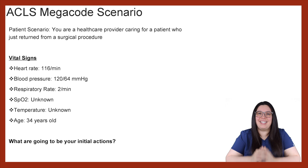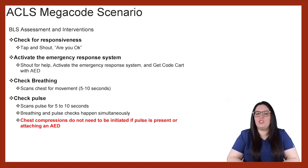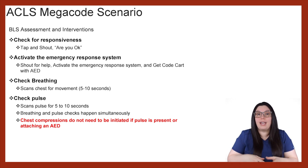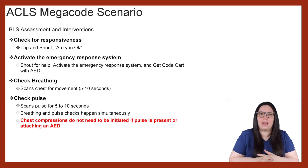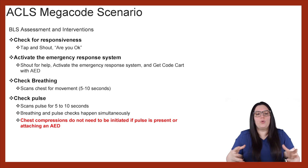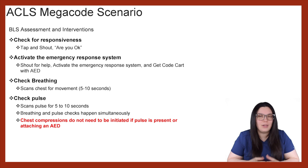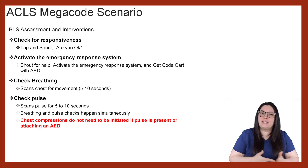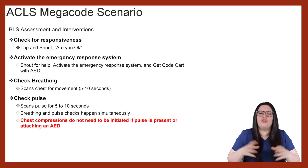For initial actions, we're going to do our BLS assessment as well as intervention. We want to check for responsiveness — tap and shout, 'Are you okay?' You want to see if you can rouse the patient. If the patient is still unresponsive, we're going to activate the emergency response system: shout for help and start getting the code cart ready with the AED. Right now the patient still has a pulse and heart rate, so just in case things go bad, we want that equipment at the bedside.